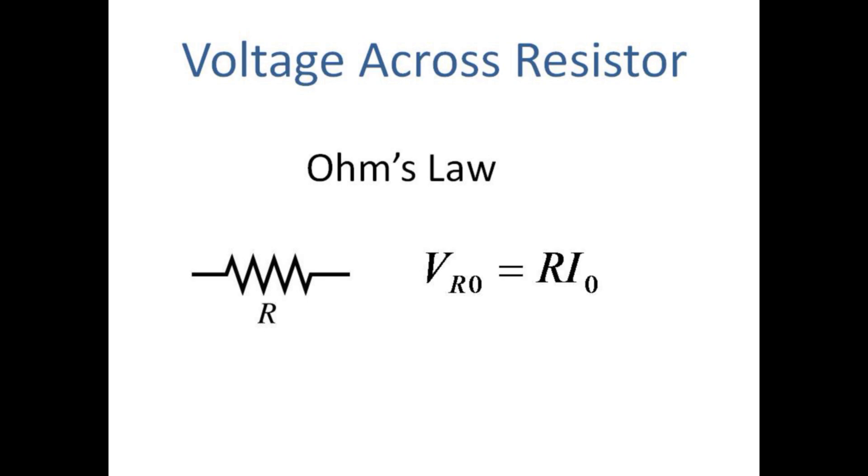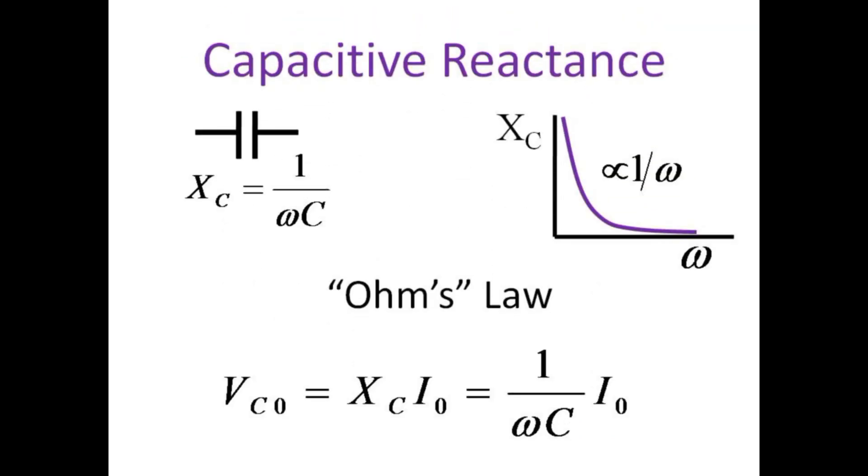Let's now consider the voltage drop across each element. The resistor is easy by Ohm's law, V equals R times I. The capacitor responds differently at different frequencies, with reactance rather than resistance. At low frequencies, the capacitor acts like an open circuit with infinite reactance, but at high frequencies, the capacitor's reactance is reduced and the capacitor becomes innocuous, like a bare wire, with no effect on the circuit.